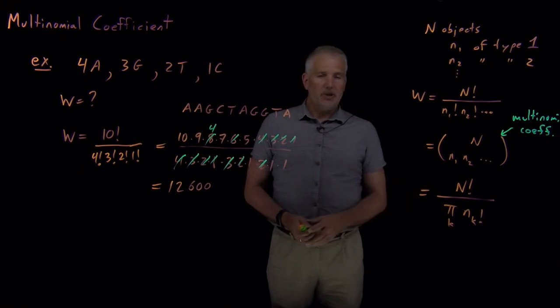The next step will be using that multinomial coefficient to write down the multinomial probability distribution.